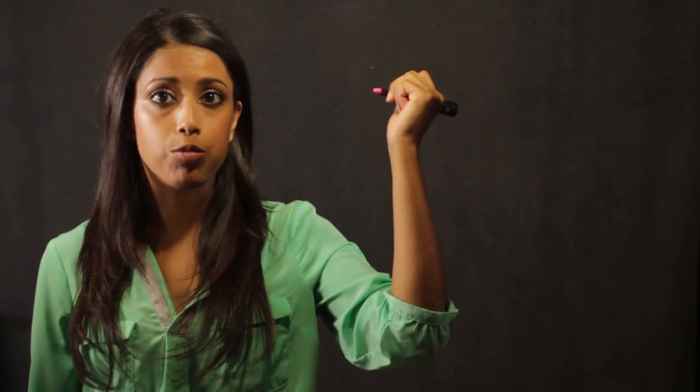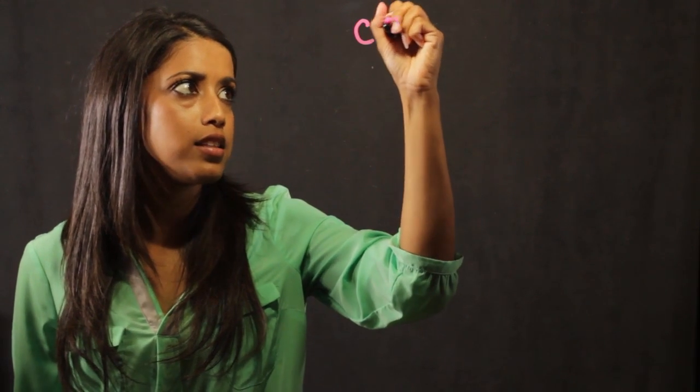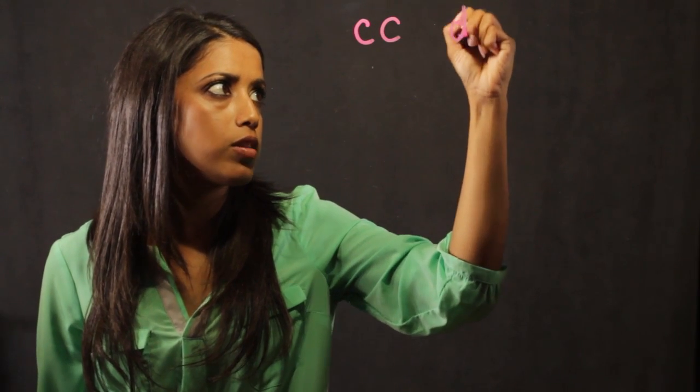If we took the example that for every two cats there were three dogs, we're going to represent those with C's and D's. So for every two cats there exists three dogs.